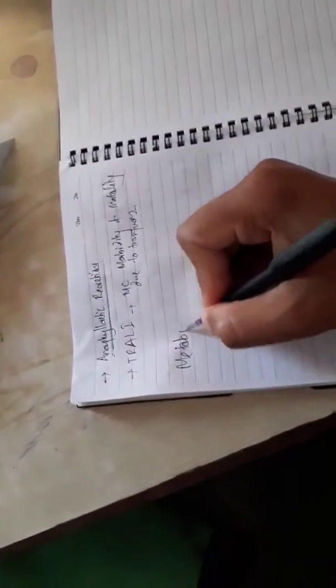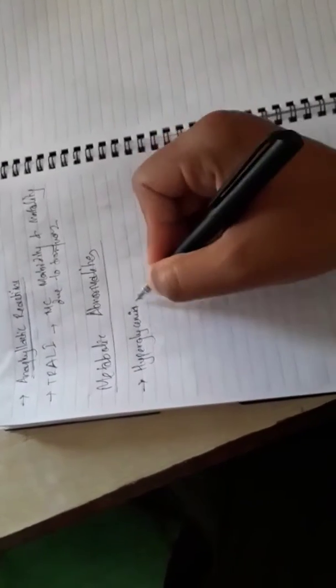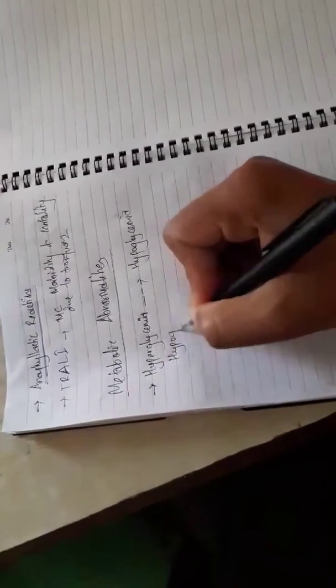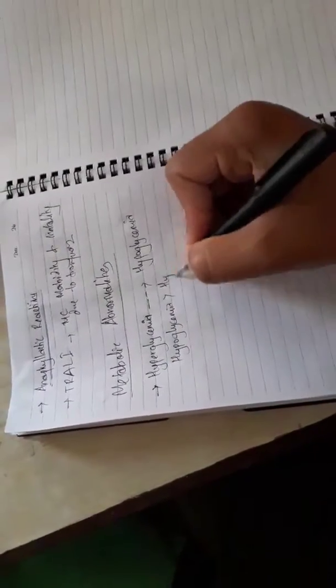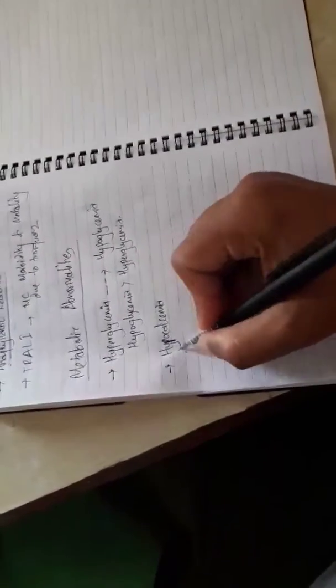In metabolic abnormalities: most metabolic abnormalities are due to the preservative components. For example, hyperglycemia will be there due to dextrose or glucose in the preservative medium, but this will cause hyperinsulinemia and then it will cause hypoglycemia. Commonly hypoglycemia is more common than hyperglycemia. Similarly, hypocalcemia will be there because citrate and phosphate will form calcium salts and the calcium will be consumed. Similarly, magnesium salts may be formed and magnesium will be consumed, so hypomagnesemia may also occur.